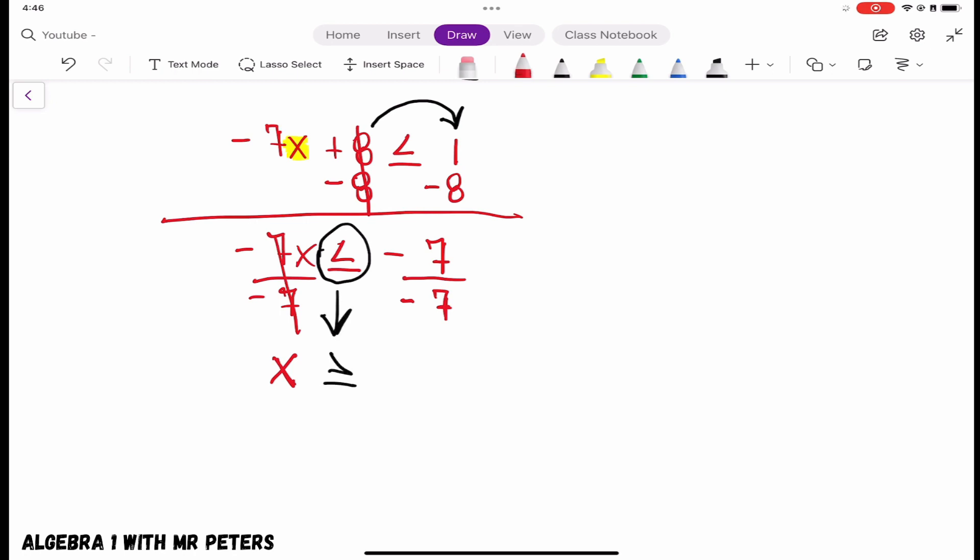So now, instead of being less than or equal to, x is greater than or equal to negative 7 divided by negative 7, which is just positive 1. So when you divide by negative x, guys, flip your inequality symbol.